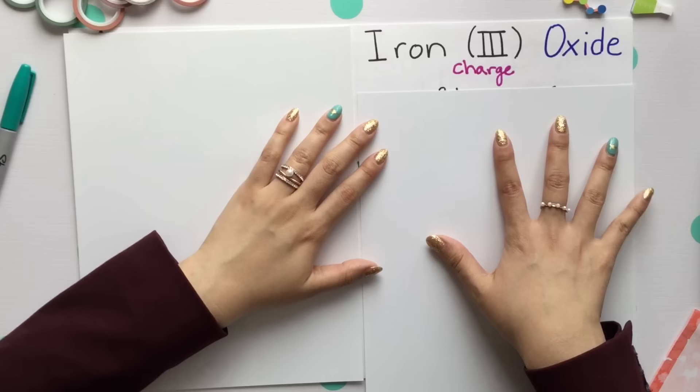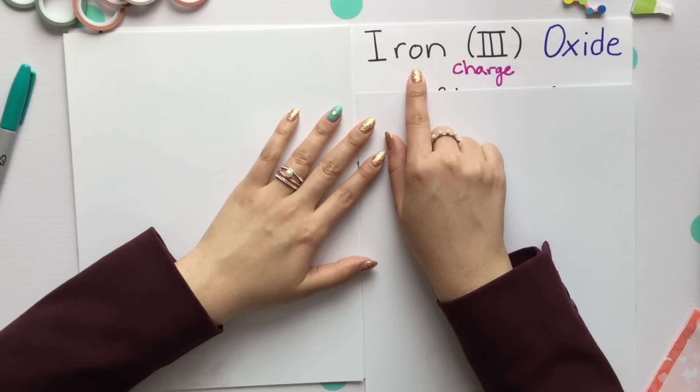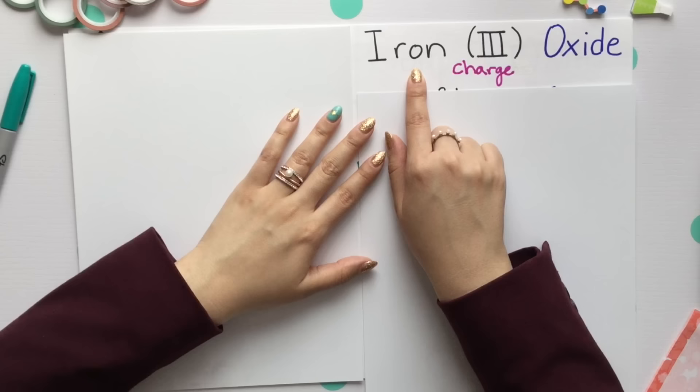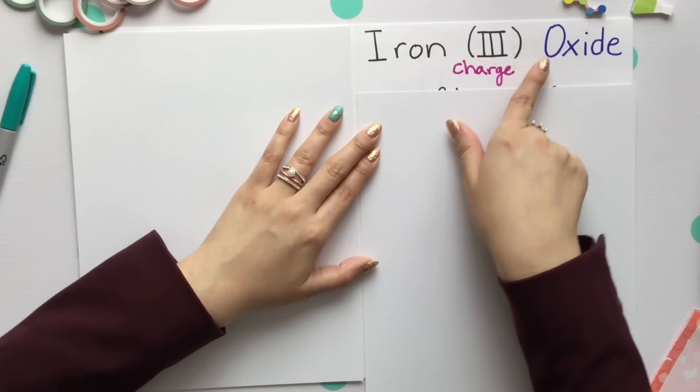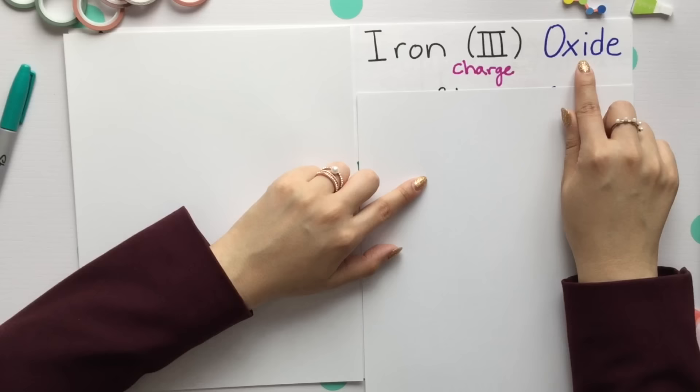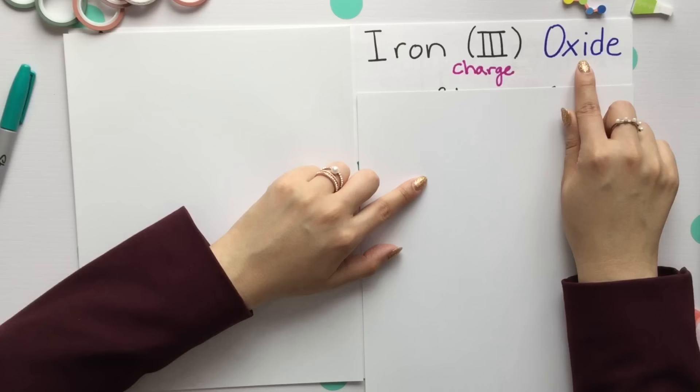Your Roman numeral tells you the charge of your transition metal. A lot of times transition metals have different types of charges. Iron sometimes has a 2+ or 3+ charge. So our Roman numeral tells us the charge of what iron is within this compound. Your non-metal is oxygen, which ends in ide.